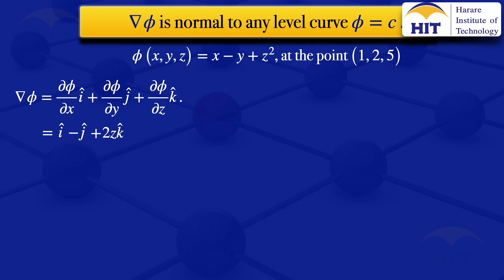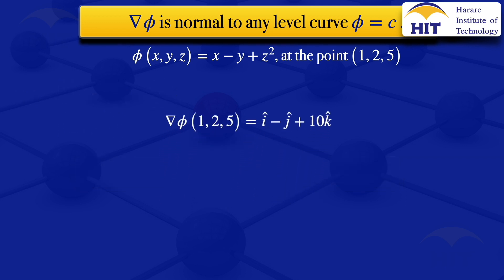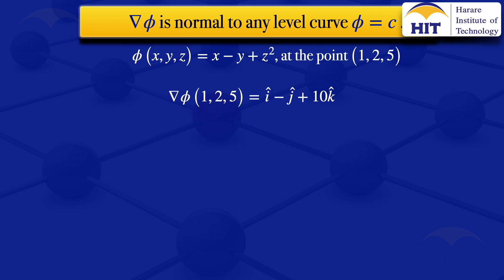We then evaluate grad phi at the given point (1, 2, 5), setting x = 1, y = 2, z = 5, and substituting into grad phi. This gives grad phi at (1, 2, 5) equal to i minus j plus 10k. That is the normal to the surface x minus y plus z squared equals 3.